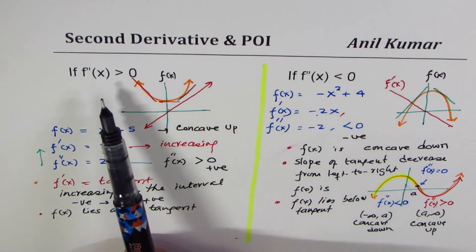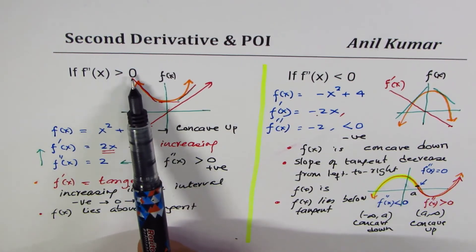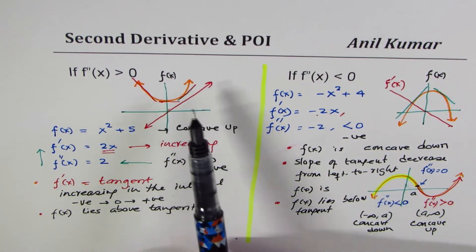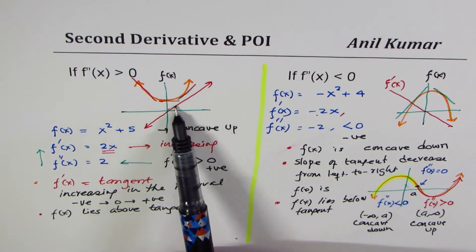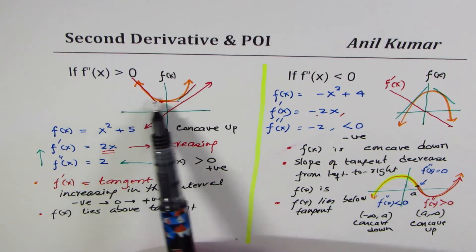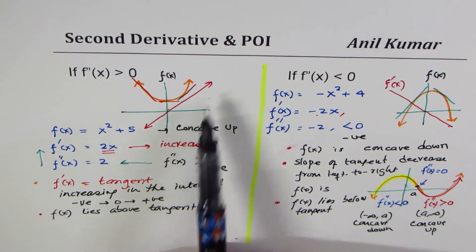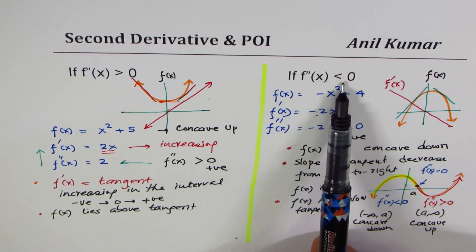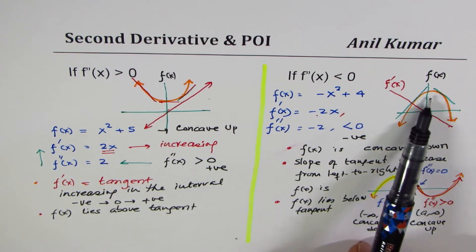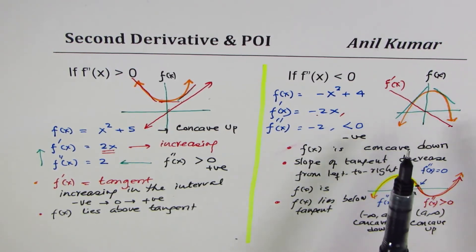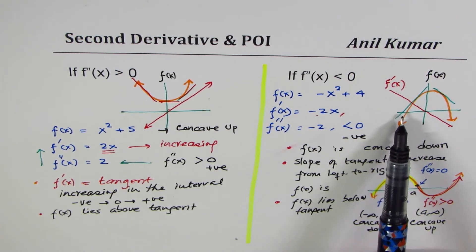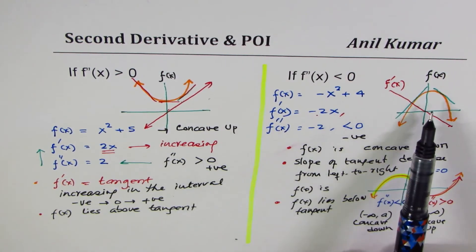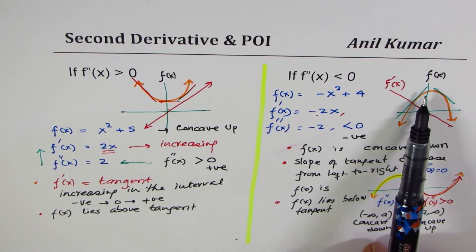Let's summarize. If the second derivative is greater than 0 — positive — the graph of the function is concave up, the graph lies above the tangent, and the tangent slope always increases from left to right. On the other hand, if the second derivative is less than 0, the graph is concave down, the slope of the tangent changes from positive to zero to negative — so it decreases — and the graph lies below the tangent line.